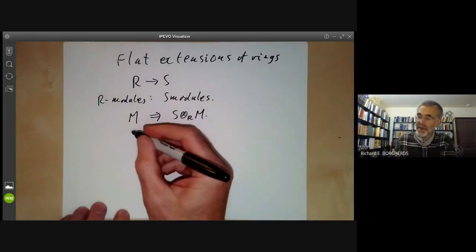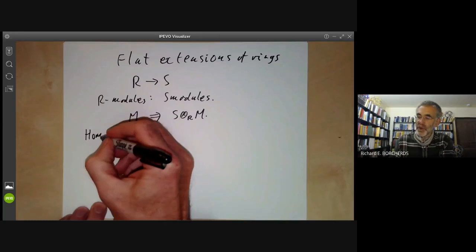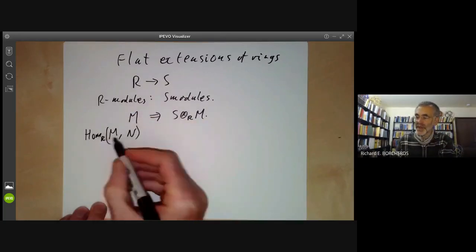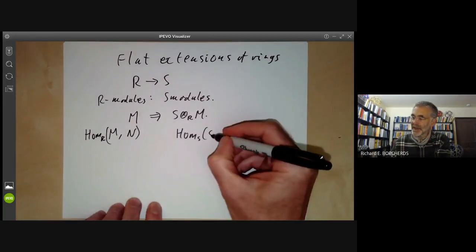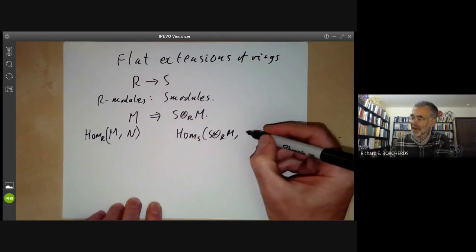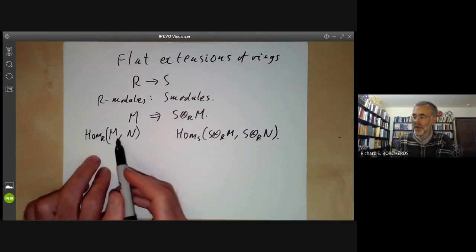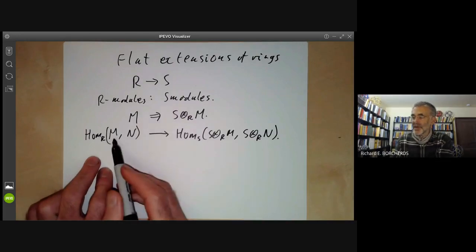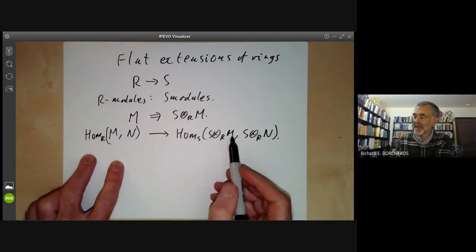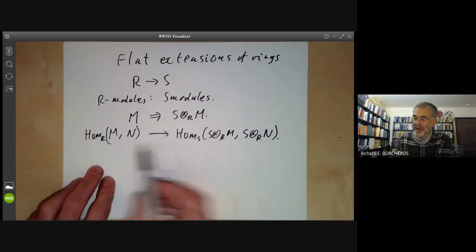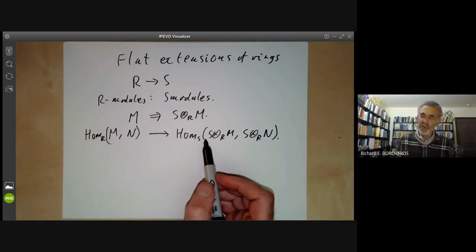The most obvious question is: suppose we have two R-modules M and N. We can look at the homomorphisms of R-modules from M to N. On the other hand, we can look at the homomorphisms of S-modules from S tensor over R of M to S tensor over R of N. There is an obvious function from one to the other, because a homomorphism from M to N induces one from S⊗M to S⊗N. We can ask: is this an isomorphism?